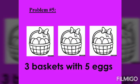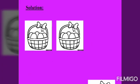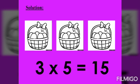Problem number 5. 3 baskets with 5 eggs. 3 times 5 equals 15. Because in 3 baskets, each one has 5 eggs. So we will just multiply 3 times 5 equals 15. So there are 15 eggs in 3 baskets.